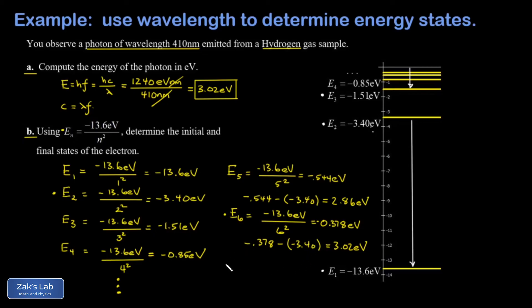So to write down our final answer, that photon we observed must have come from an initial n of six and a final n of two. And that's it.